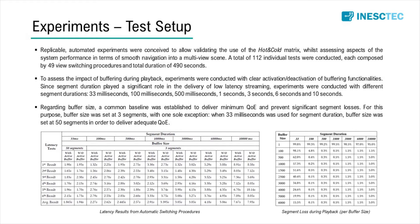Automated experiments were designed for the evaluation of SmoothMV's performance and the hot and cold matrix, assessing smooth navigation and view transitioning. We devised 112 tests with specific duration and view switching procedures. To evaluate the impact of buffering, we applied clear activation and deactivation of the buffering functionalities, and used various segment durations from 33 milliseconds to 10 seconds. For buffer size, a common baseline of three segments was used, with the exception of the 33-millisecond segment duration, where 50 segments were used to provide the best quality of experience.